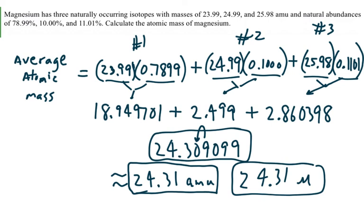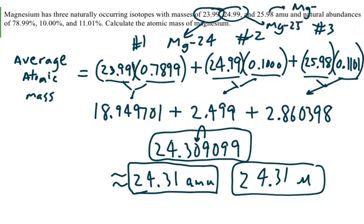The number 24.31 is closest to magnesium-24, which rounds to 24. The three isotopes, if rounded, would be magnesium-24, magnesium-25, and magnesium-26. Magnesium-24 exists about 79% of the time, confirming that our average is closest to the most common isotope, which is magnesium-24. You will always get a decimal when calculating the average atomic mass, because you are obtaining an average of all the isotopes for that particular element.